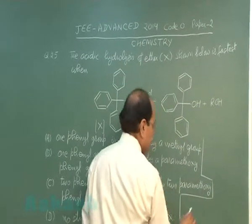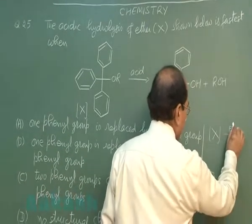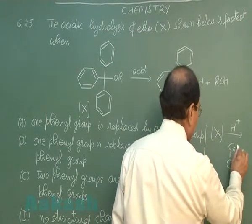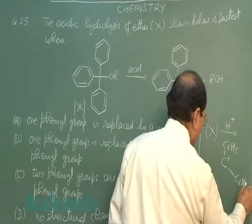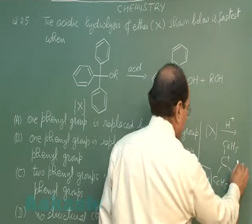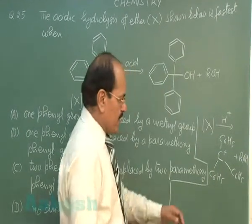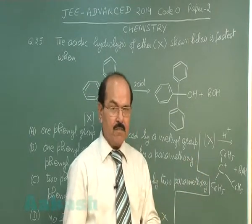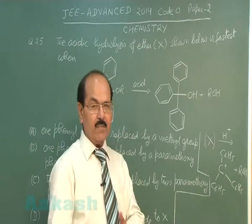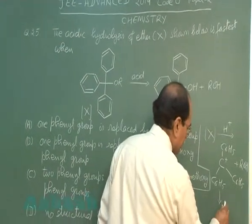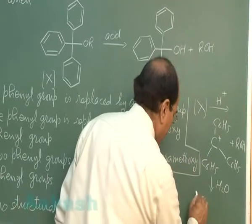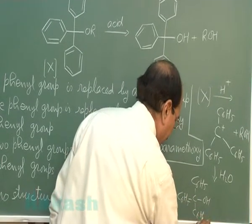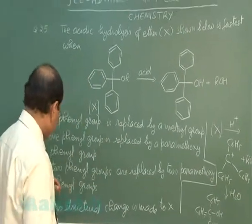When X is treated with H+, a triphenyl methyl carbocation is formed as an intermediate. By substituting two of the phenyl groups with paramethoxy phenyl groups, the carbocation will be more stable, so the rate of reaction will be fastest. The correct option is option C.